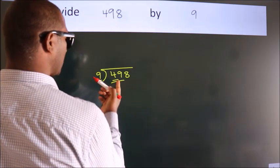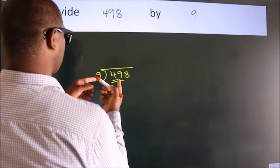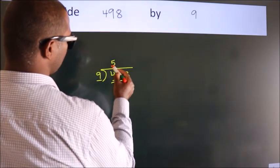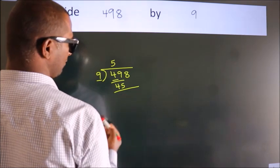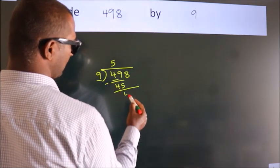A number close to 49 in 9 table is 9 fives, 45. Now we should subtract. We get 4.